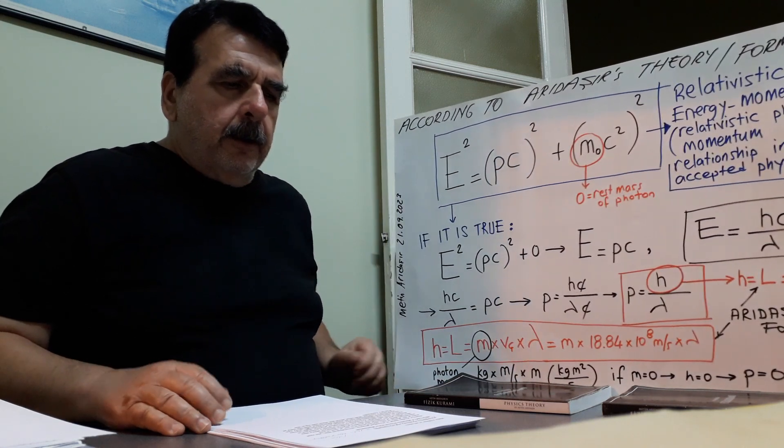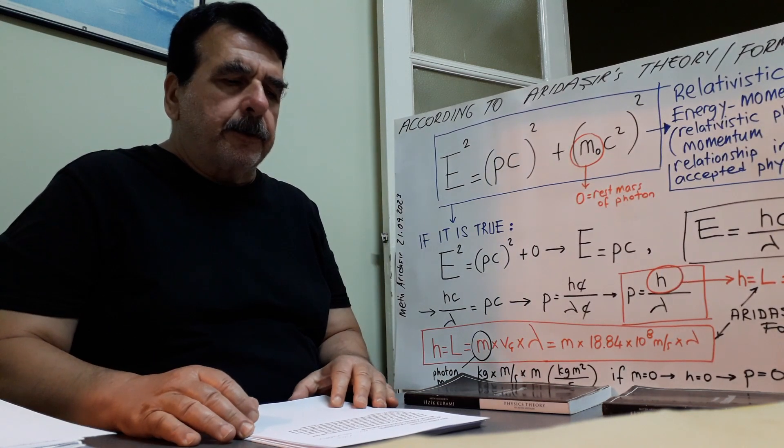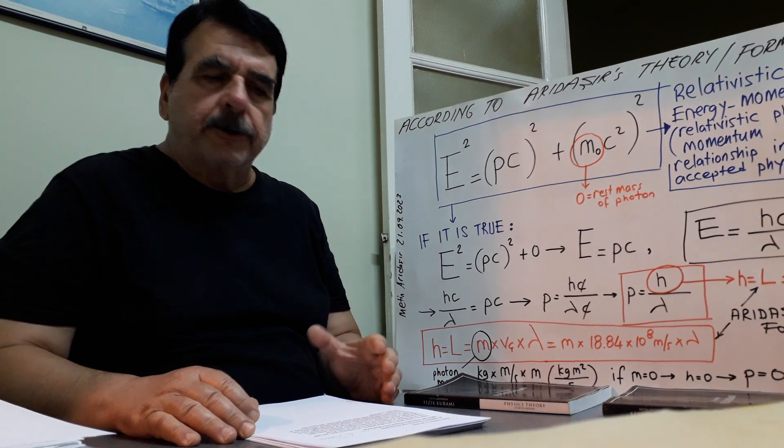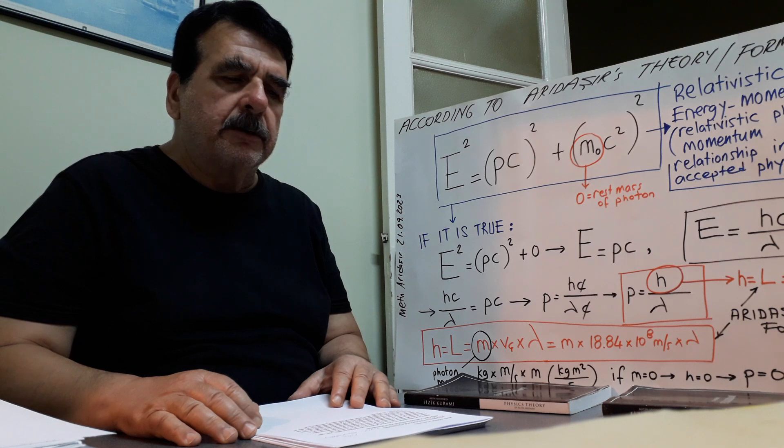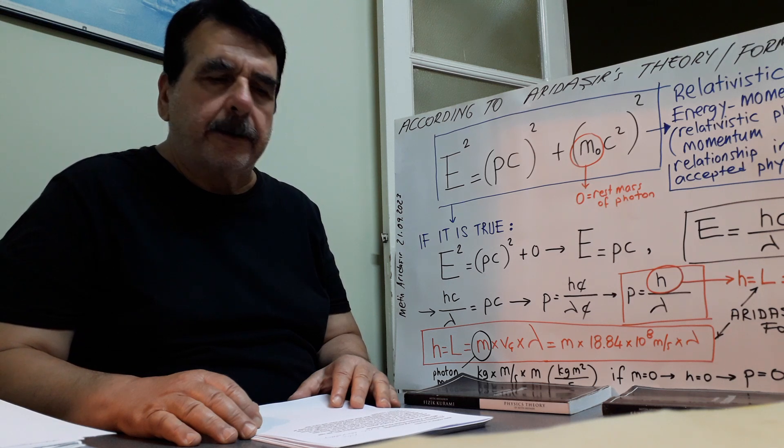According to my theory and my formulas, why can't a massless photon have momentum? The fall of massless momentum of the photon idea.